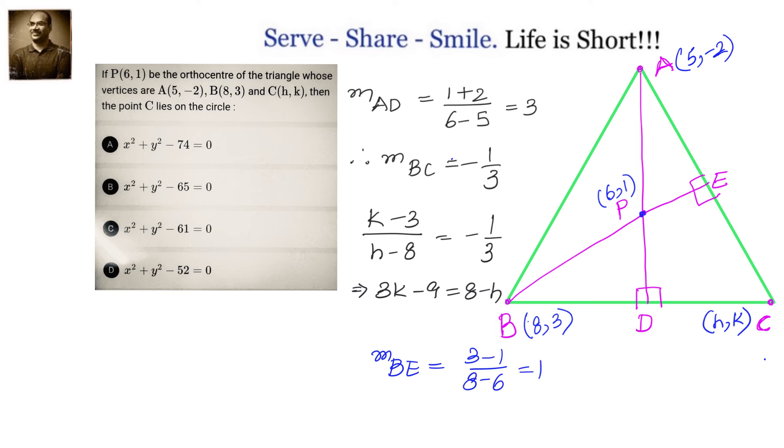For that, let us find out what is the slope of BE. BE slope is 3 minus 1 by 8 minus 6, which equals 1.